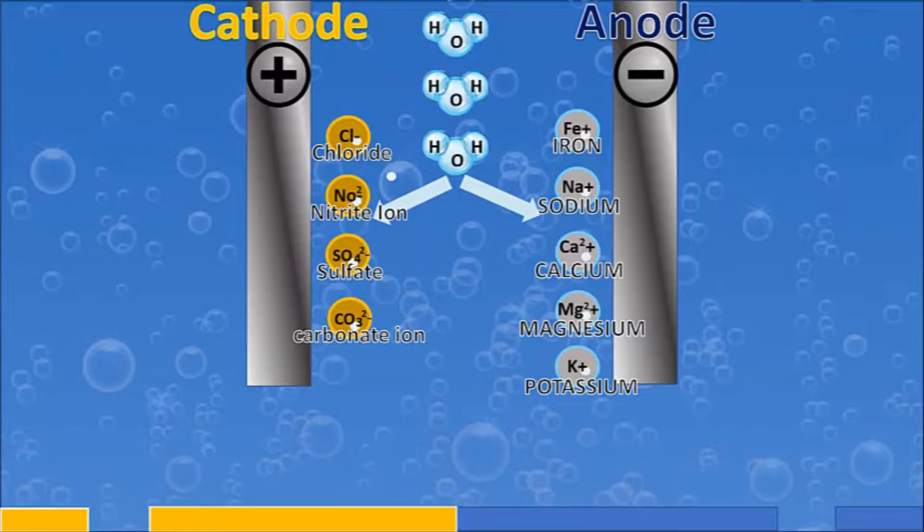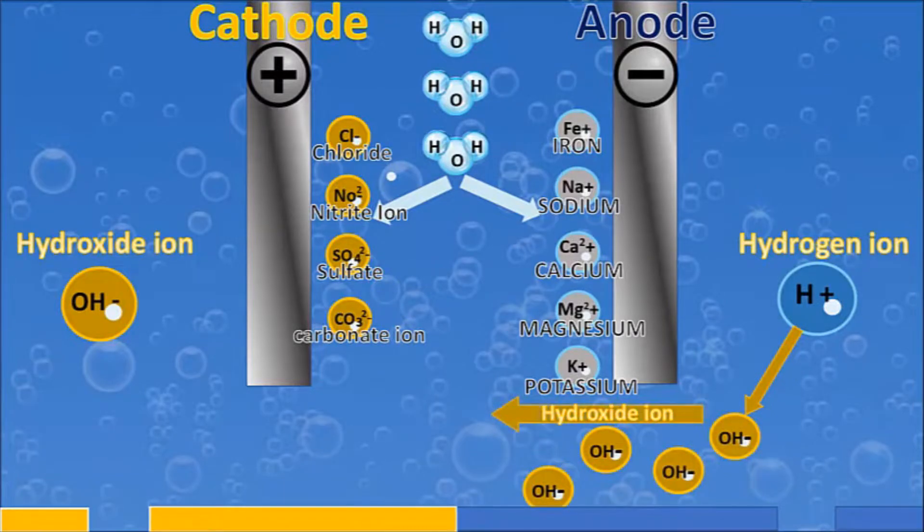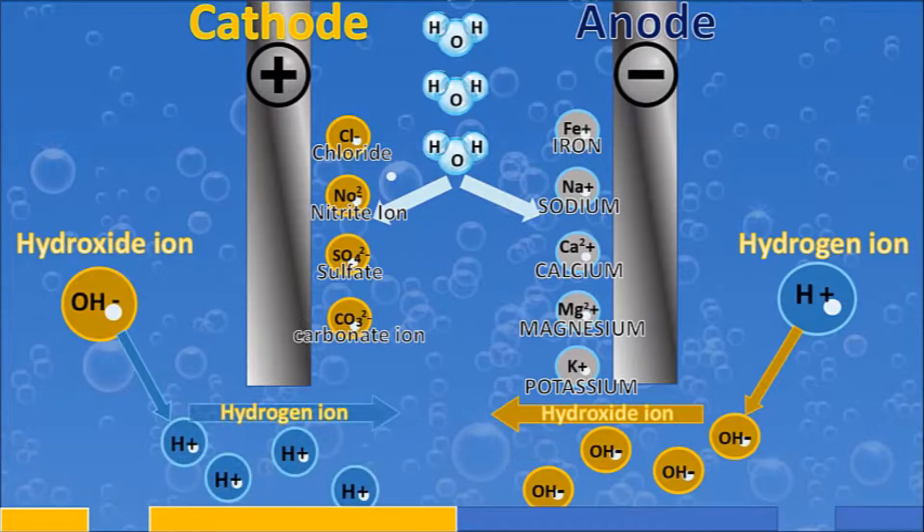As the water gets charged, this is what happens: we're creating a hydroxide ion and on the other side we're creating a hydrogen ion. And how this happens is the hydroxide ion gets released with the charge, so we're splitting the H2O on this side and on the other side to create this hydroxide ion, we're releasing the hydrogen ion.